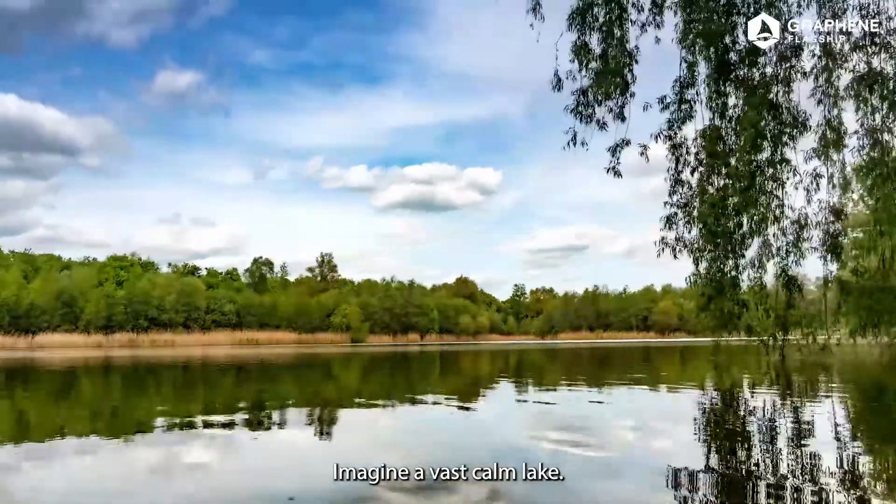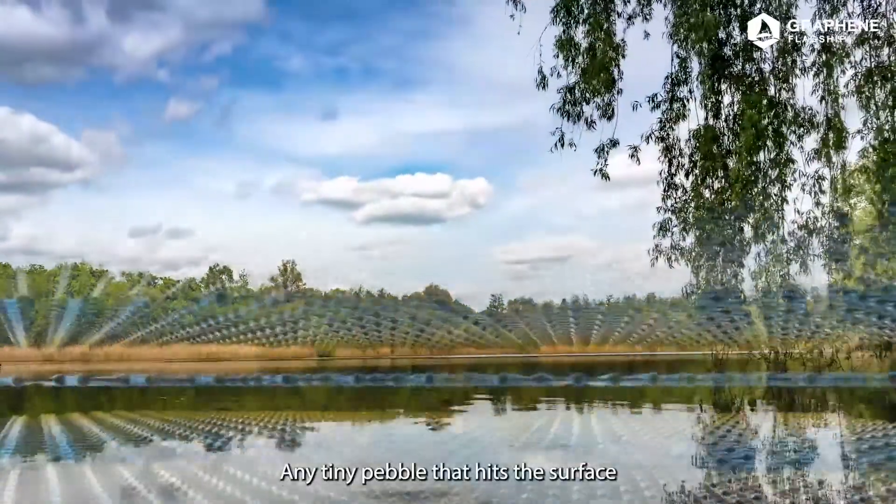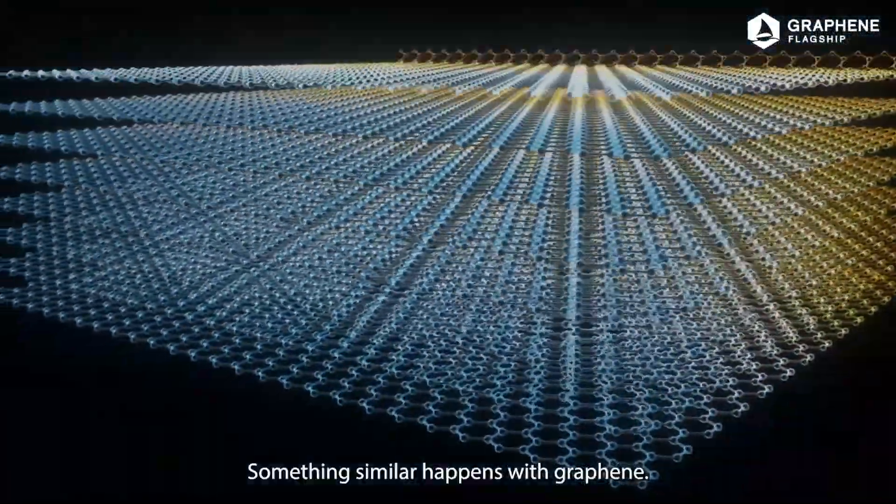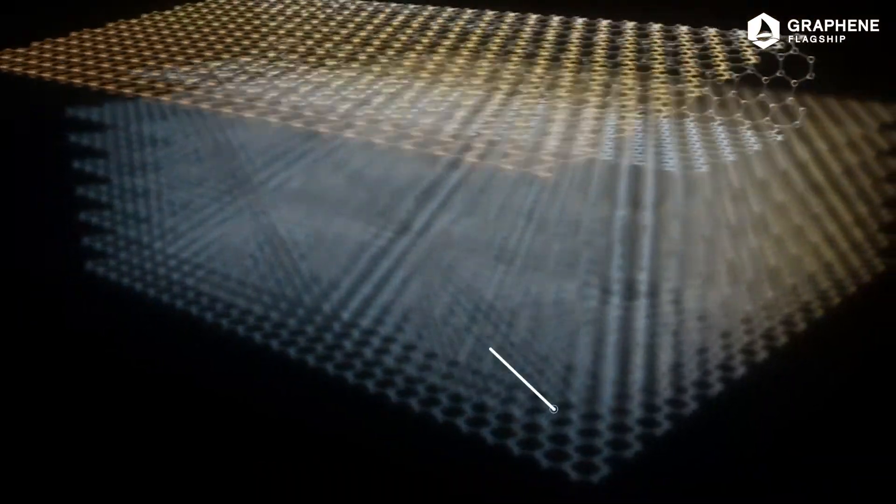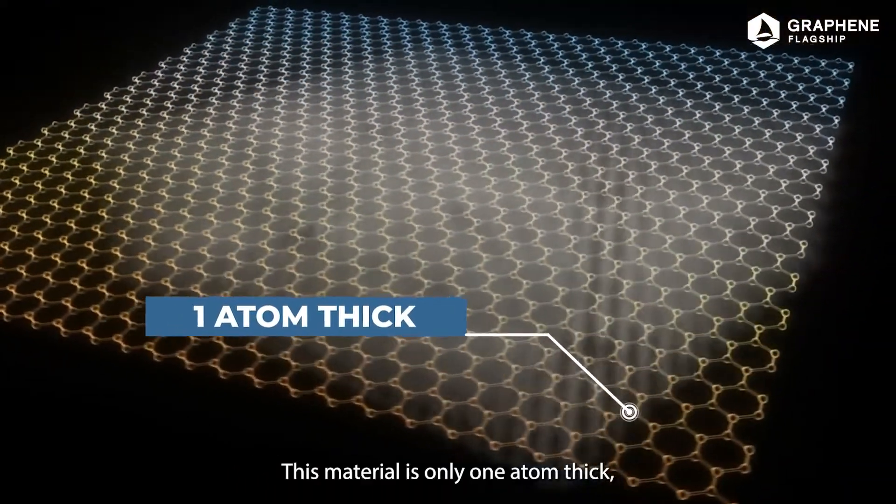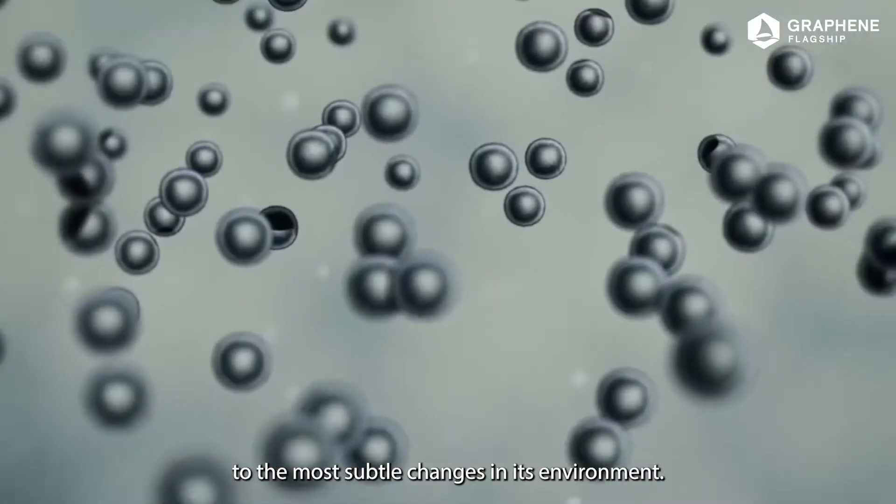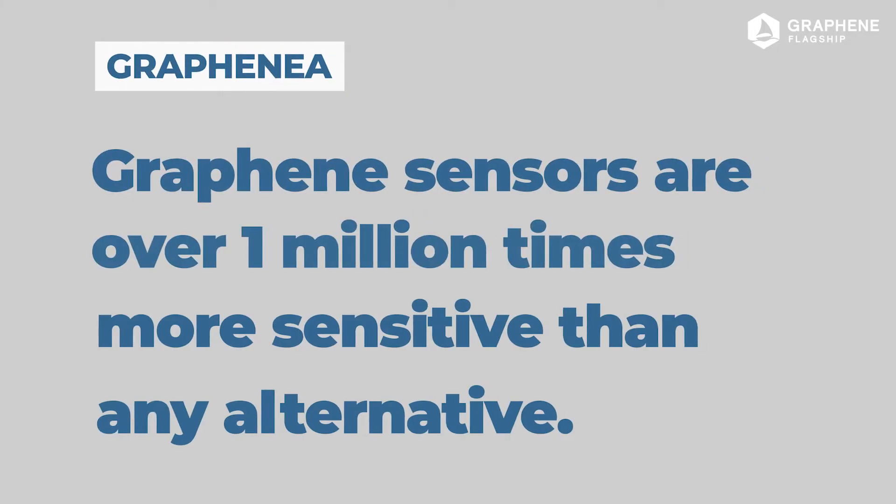Imagine a vast calm lake. Any tiny pebble that hits the surface creates a huge ripple effect. Something similar happens with graphene. This material is only one atom thick, which makes it extremely sensitive to the most subtle changes in its environment. Today, graphene sensors are over 1 million times more sensitive than any alternative.